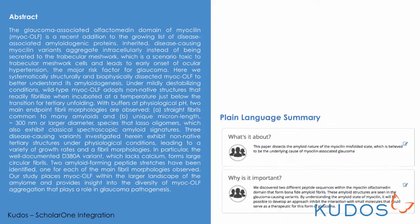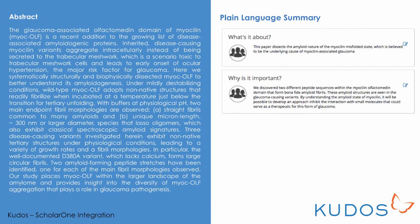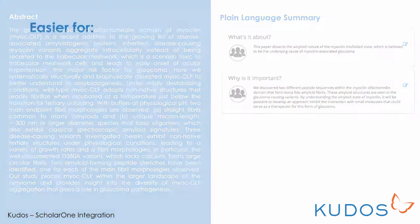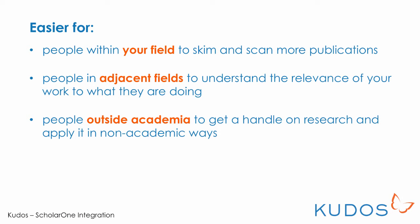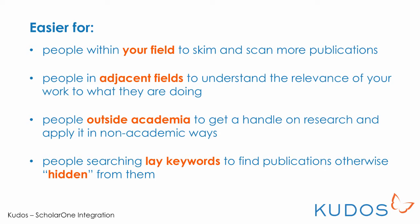We've found that plain language summaries give readers an instant overview of an article, making it easier to understand and also easier to find, whether that's by people within your own field, in adjacent fields, or by readers outside of academia. And this unlocks new audiences for your work, who may well start their search using plain language search terms.